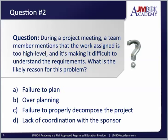Question number two. During a project meeting, a team member mentions that the work assigned is too high level, and it's making it difficult to understand the requirements. What is the likely reason for this problem? A. Failure to plan. B. Over planning. C. Failure to properly decompose the project. Or D. Lack of coordination with the sponsor.